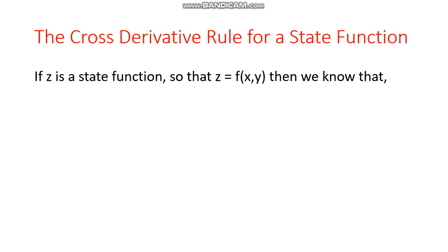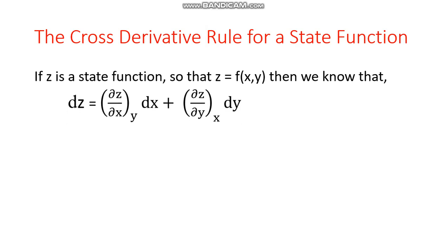x and y are two other variables. The expression of dz can be easily written from the previous rules as (del z / del x) at constant y, into dx, plus (del z / del y) at constant x, into dy. This is the rate of change in the value of z with respect to x at constant y, and this is the rate of change in the value of z with respect to y at constant x.